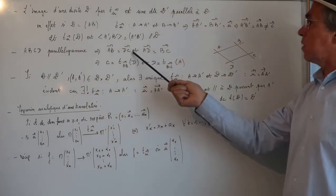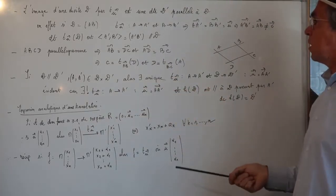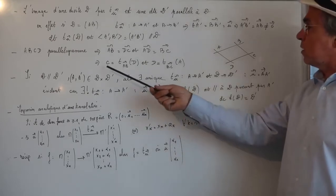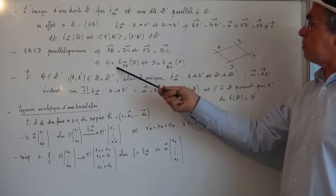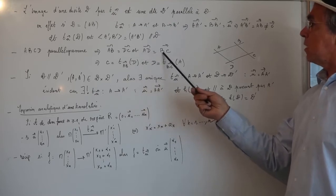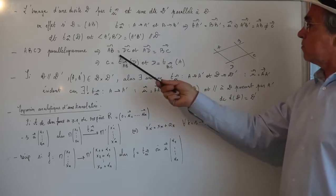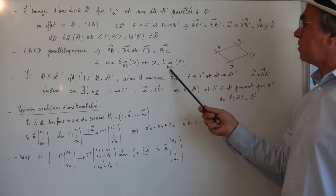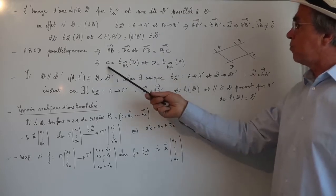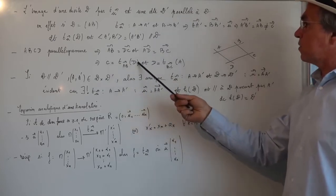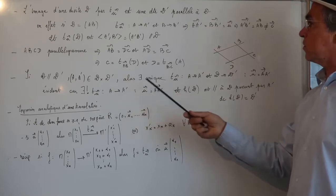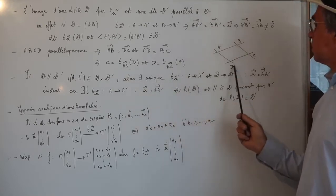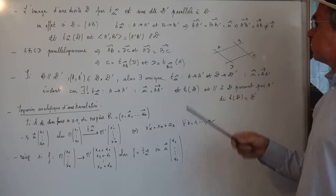Si ABCD est un parallélogramme, on sait que vecteur AB égale vecteur DC et vecteur AD égale vecteur BC. Cela dit exactement que C est égal à D plus vecteur AB, et que D est égal à A plus vecteur BC. Donc le point C est le translaté de D dans la translation de vecteur AB, et le point D est le translaté de A dans la translation de vecteur BC.